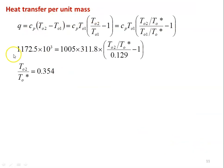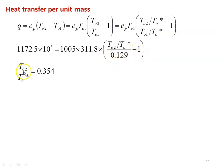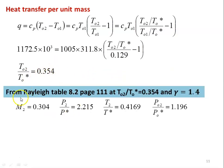Heat transfer: Q = Cp × T01 × (T02/T0* / T01/T0* − 1). Substituting: 1172.5×10³ = 1005 × 311.8 × (T02/T0* / 0.129 − 1). Solving: T02/T0* = 0.354. From Rayleigh table 8.2, page 111, at T02/T0*=0.354, gamma=1.4: M2=0.304, P2/P*=2.215, T2/T*=0.4169, P02/P0*=1.196.